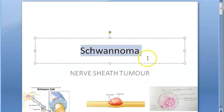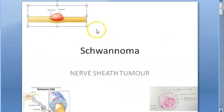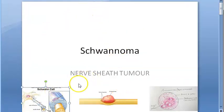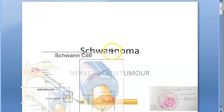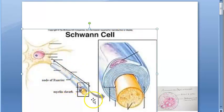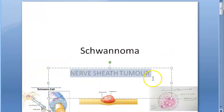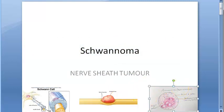In this video, let us look at schwannoma, or vestibular schwannoma to be very specific. It is basically a nerve sheath tumor. A nerve has a sheath made of Schwann cells, and a tumor involving this nerve sheath is called a nerve sheath tumor or schwannoma.